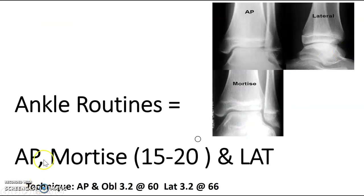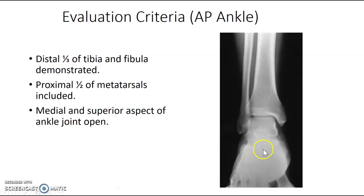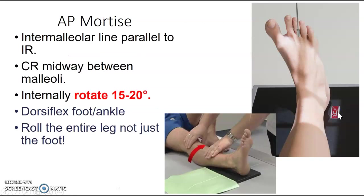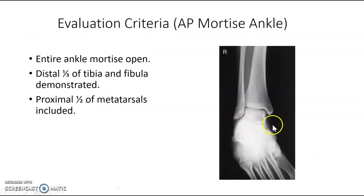For the ankle, our routine is an AP ankle, a mortise — which is the 15 to 20 degree oblique ankle — and a lateral. For the AP ankle, you're going to dorsiflex the foot and center midway between the malleoli. For the mortise, rotate the patient's leg internally 15 to 20 degrees — not just the foot; place a hand on the knee and on the lower leg — keeping the foot dorsiflexed. That opens the mortise joint.